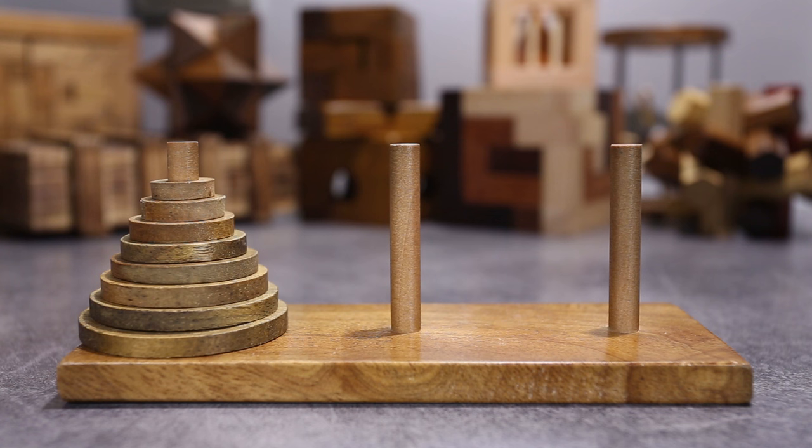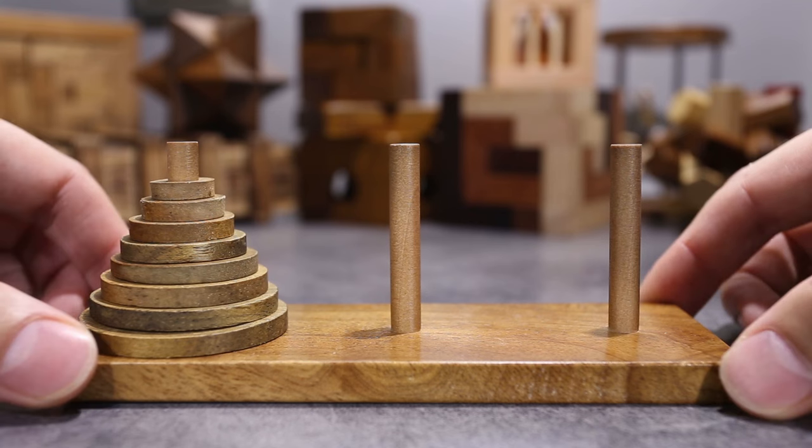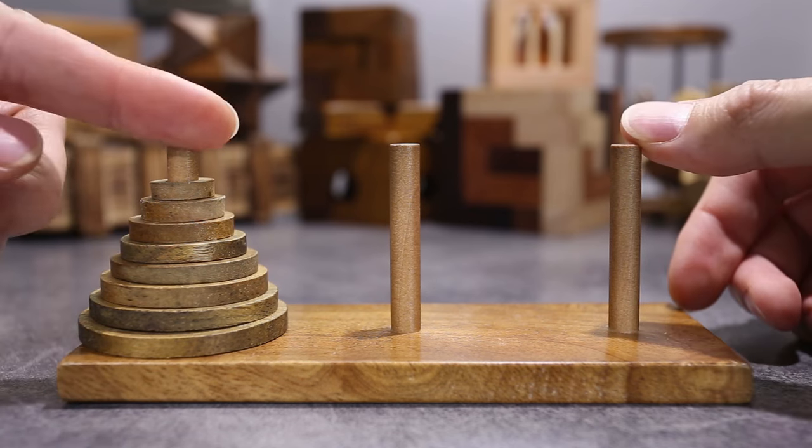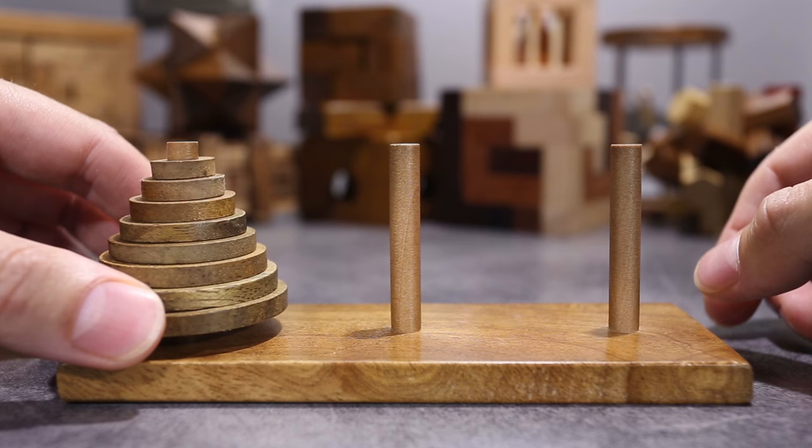Hello, this is the puzzle guy and today I have a puzzle which was invented in 1883 by a French mathematician and the name of this puzzle is Tower of Hanoi. As you can see it's made out of wood, it has three pegs and eight discs.